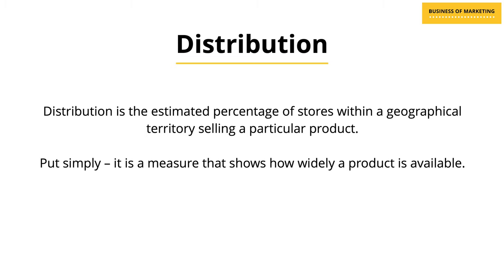Let me start by explaining what distribution actually is. Distribution is the estimated percentage of stores within a geographical territory selling a particular product — or put very simply, it's the measure that shows how widely your product is available. So if your product is available in 5 out of 10 stores in a specific region, the distribution is 50%. This measure is called numeric distribution.